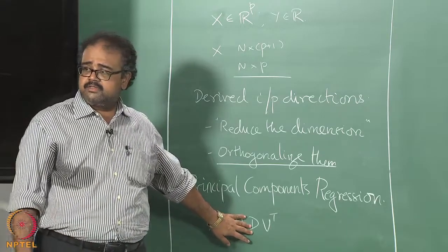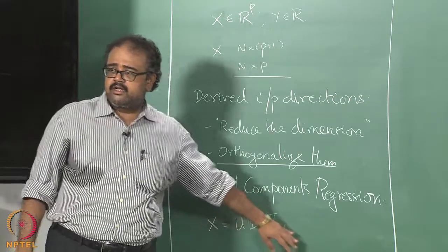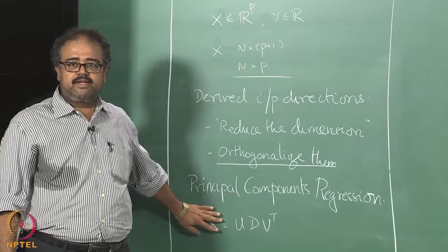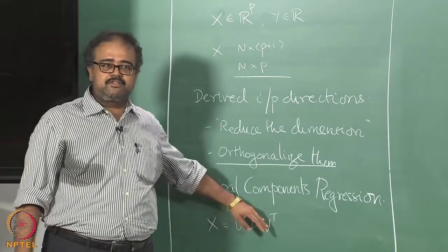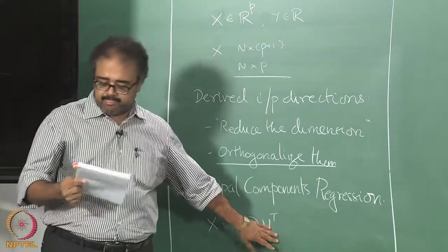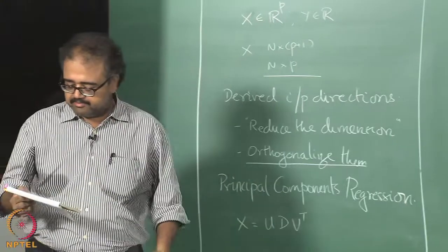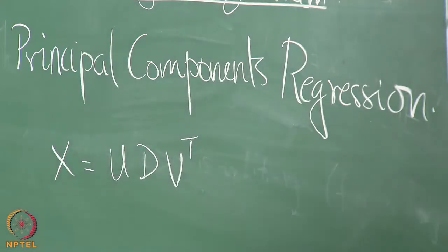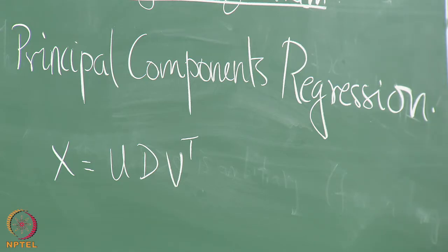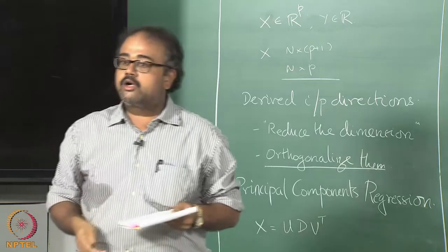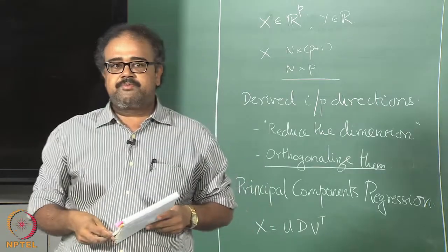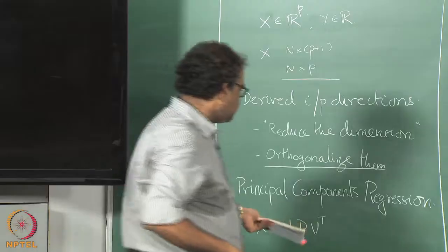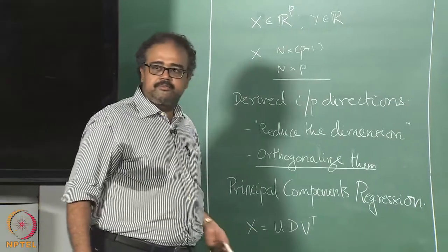D is a diagonal matrix where the diagonal entries are your eigenvalues, otherwise known as singular values. V is a P×P matrix which has your eigenvectors, and U is an N×P matrix which typically spans the same column space as X. This is essentially your singular value decomposition.